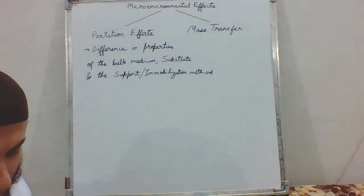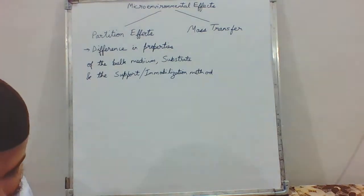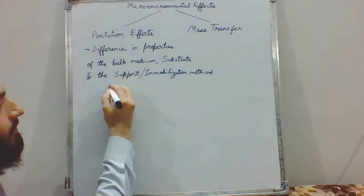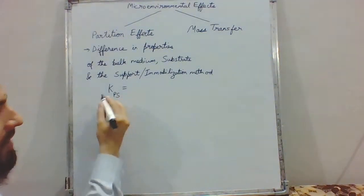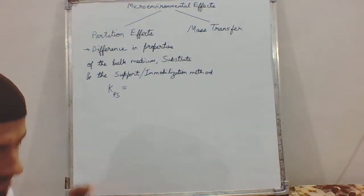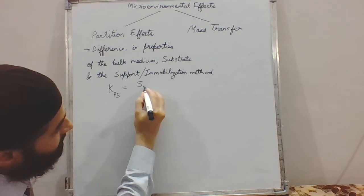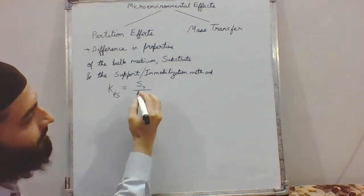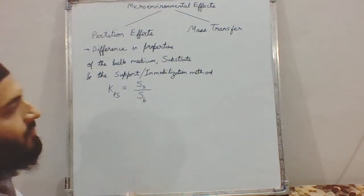The partitioning of any substrate between two phases is simply a ratio of concentrations between the two phases. The partition effect can be defined by the partition coefficient, which is the ratio of the substrate concentration at the surface or in the micro-environment of the enzyme to the bulk substrate concentration.